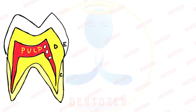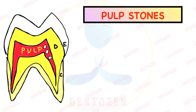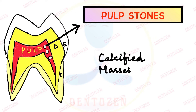Hi everyone, welcome to Dentescent. Can you see those small white areas inside the pulp, looking like some small stones? Yes, they are called pulp stones. Like a stone is a hard structure, these are also hard, made up of calcium. So they are calcified masses in the pulp, and so they are called pulp stones.